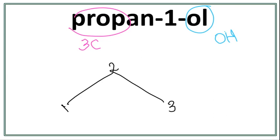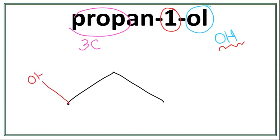Now, we have this '1' here. This tells us that this OH, this alcohol group, is attached on the first carbon. So let's get rid of these numbers and attach the OH on the first carbon. This is the structure for propanol or propan-1-ol.